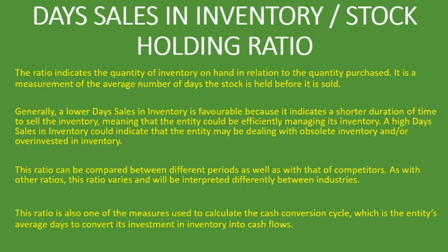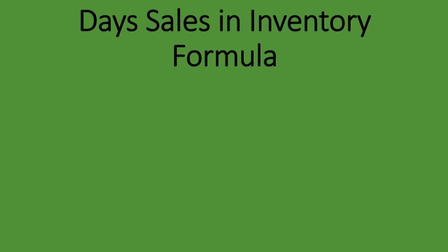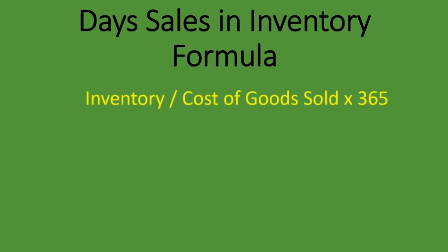This ratio is also one of the measures used to calculate the cash conversion cycle, which is the entity's average days to convert its investment in inventory — you'll find a link to that lesson in the description below. The formula for day sales in inventory is: inventory divided by cost of goods sold, multiplied by 365 (or the number of days in a year).